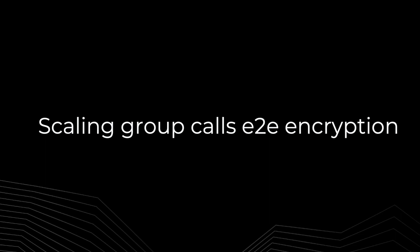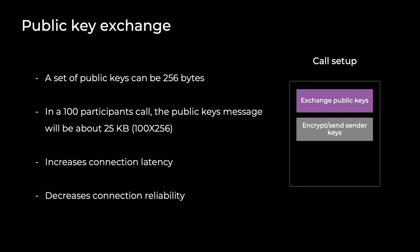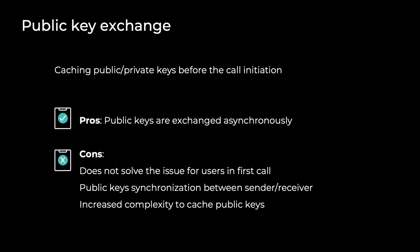Now let's move on to scaling group calls with end-to-end encryption and the challenges. There are three main areas: public key exchange, S-Frame encryption and decryption latencies, and key negotiation. An example set of public keys for each participant can be 256 bytes, including identity key and ephemeral keys. These keys are used to set up a session key for encrypting and decrypting the sender keys. When a participant joins a call with 100 participants, they will receive public keys of all other participants — a 25-kilobyte message. This can affect both connection latency and reliability.